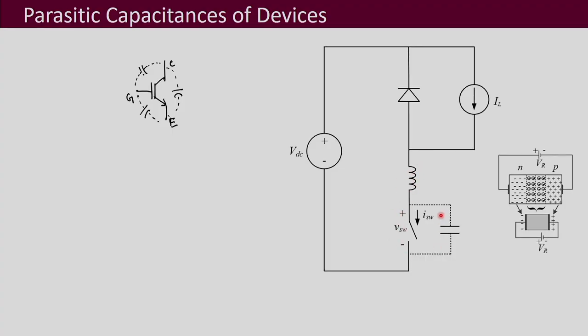There may also be ringing in the current waveforms during turn-off times. During turn-off, the ringing in the voltages is associated with the parasitic capacitances present in the transistors. Furthermore, recalling when I discussed diodes, there is a junction capacitance in diodes. The p-n junction can be modeled like a capacitor — it shows a somewhat capacitive effect. So there is capacitance between the anode and cathode of the diode as well.